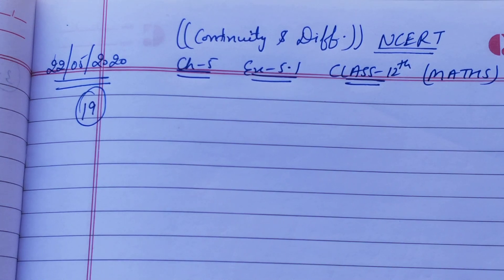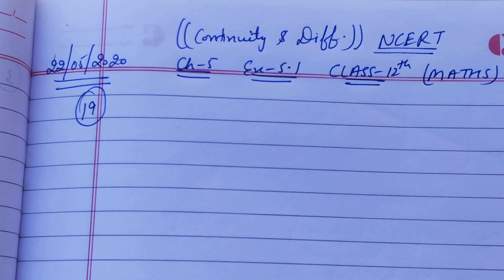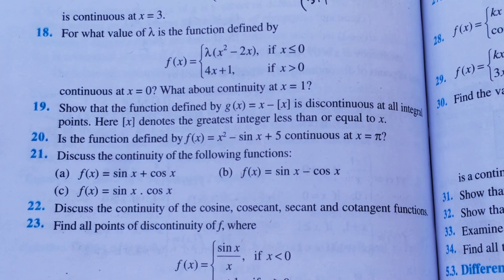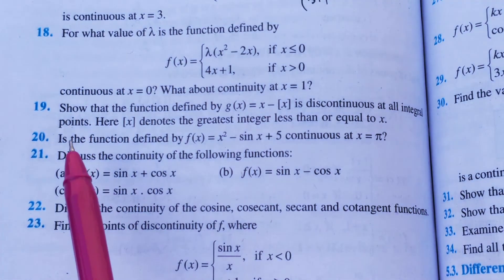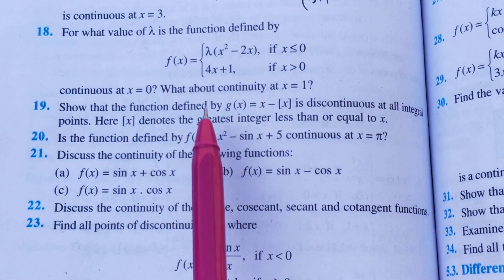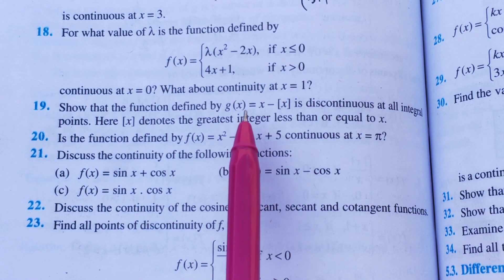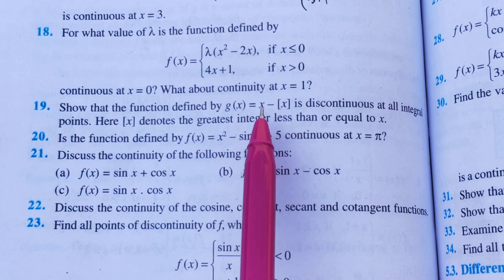Hello everyone. In our previous lectures we have done question numbers 1 to 18. So today we will do our next question, number 19. Question number 19 is: show that the function defined by g of x equals x minus greatest integer of x is discontinuous at all integral points.